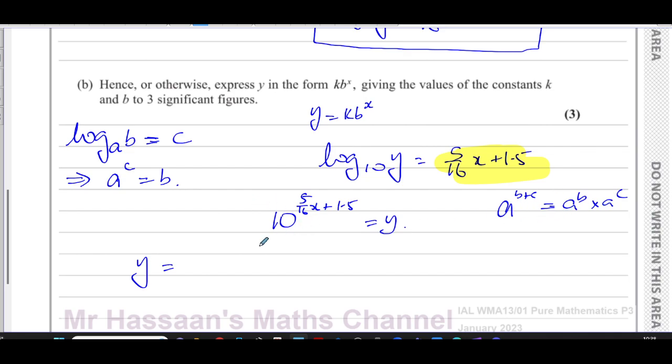So I can write this as 10 to the power of 5 over 16 x times 10 to the power of 1.5. So this will be getting close to our answer. We have 10 to the power of 1.5, and here we want to express things as something to the power of x. So this is going to be times 10 to the power of 5 over 16, and I'll write it like this to keep it separate from the x. So this is k times b to the x. So I've written it in the form we need, except they want me to write k and b to three significant figures.